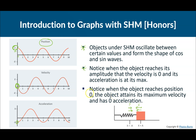Notice when the object reaches position zero, the object maintains its maximum velocity and has an acceleration of zero. The fastest it's ever going to go is when it is at the equilibrium point, which we call position zero. At this point, remember there's no net force — zero acceleration. When it is at position zero, that is when the velocity is at its maximum and the acceleration is zero. And then it just does this back and forth.